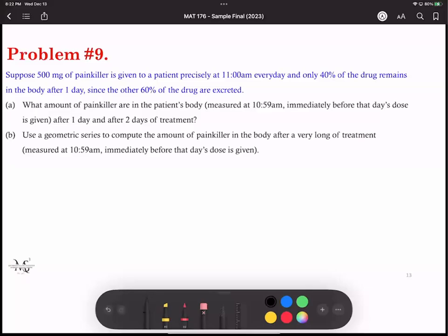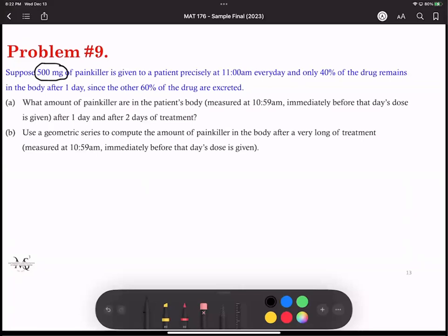Okay, so problem nine states: suppose 500 milligrams of painkiller is given to a patient precisely at 11 a.m. every day and only 40 percent of the drug remains in the body after one day. Just keep in mind, 40% is 0.40 and the other 60% of the drug is excreted. Part a states what amount of painkiller is in the patient's body measured at 10:59 a.m., right before that day's dose is given, after one day and after two days of treatment.